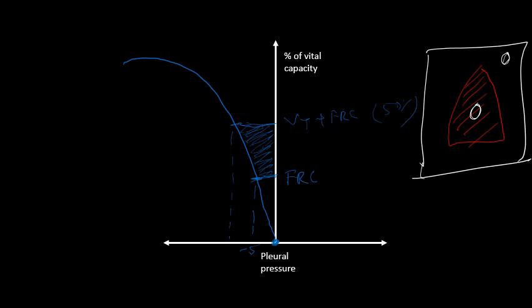So if we have the compliance curve of the chest wall here as well, this area has to be subtracted from the work of breathing because this is helping our respiratory muscles to expand the lungs outwards. So we negate this area from the work of breathing area.